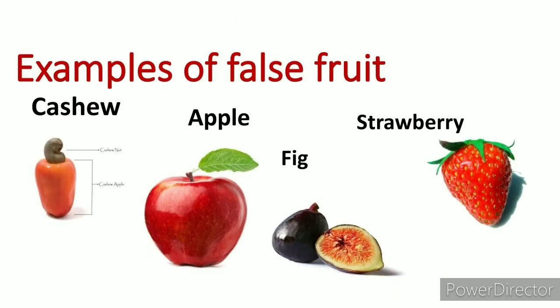Some examples of false fruit: cashew (kaju). Look, in the diagram, there is a cashew apple under the nut. The cashew apple is the fruit, and it is formed from the flower's receptacle.